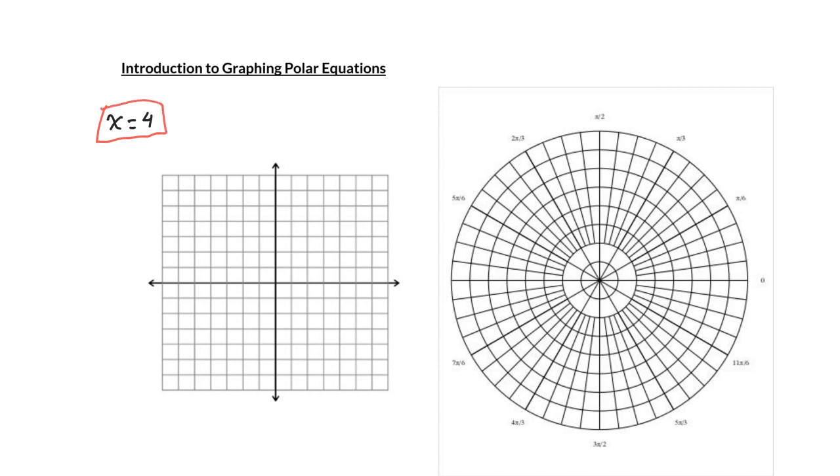You have to think way back to middle school when you graph something simple like x equals 4. x equals 4, of course, is going to be a vertical line. The reason that it's a vertical line through 4 is x is fixed at 4, but y is allowed to vary, and y varies up and down.